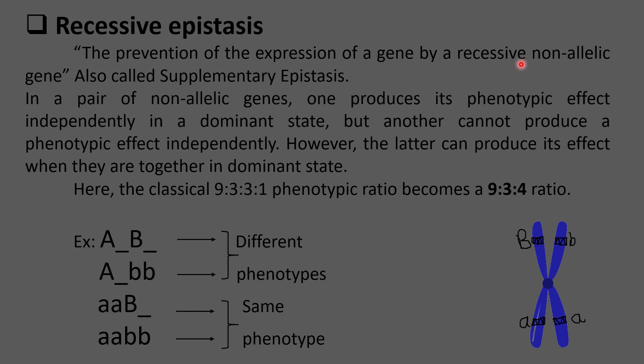In dominant epistasis, the expression of a particular gene was suppressed by the dominant non-allelic gene. While in recessive epistasis, the prevention of expression of a gene is done by a recessive non-allelic gene. That is called recessive epistasis.